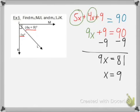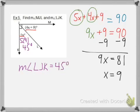Are we done? No, of course not. We would need to plug in x equals 9 to the individual pieces of the angle. So 5 times 9 in this case for the measure of angle LJK is 45 degrees. So I could say that measure of angle LJK is 45 degrees.